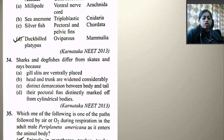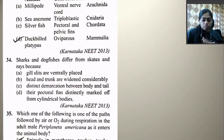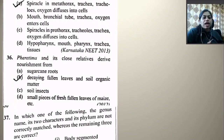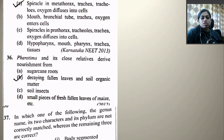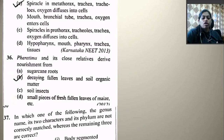Which one of the following is the correct path followed by air or oxygen during respiration in adult male Periplaneta americana? The right path is: spiracle in metathorax → trachea → oxygen diffused into cell. This is the correct pathway.